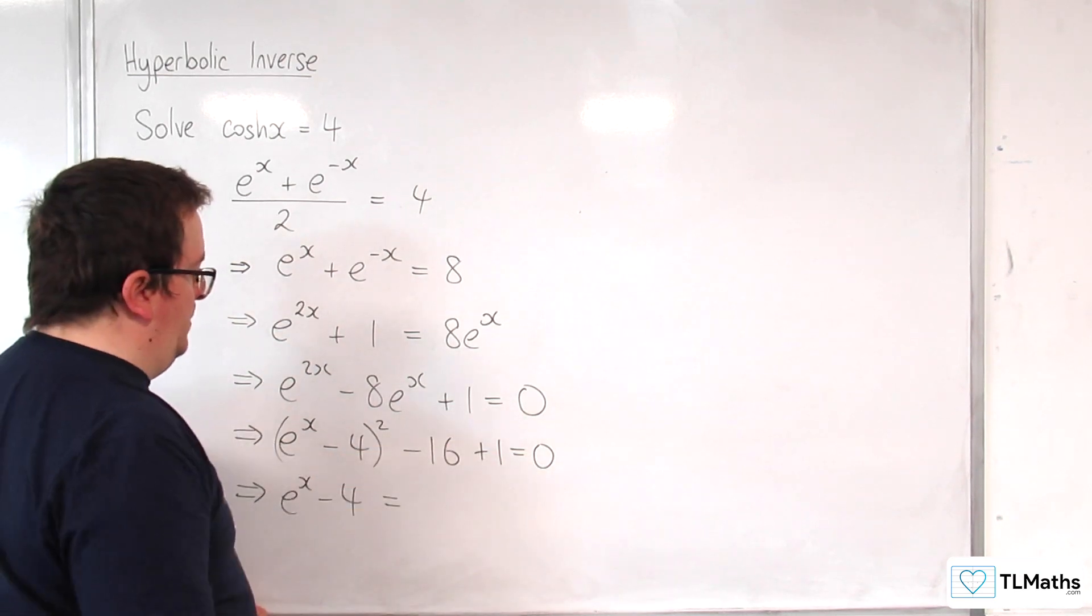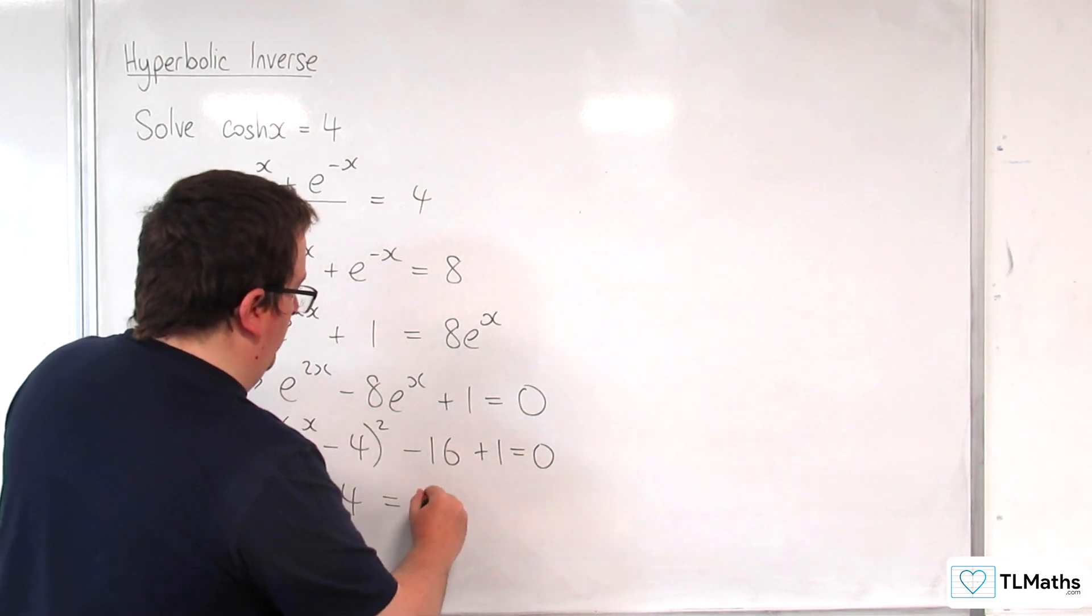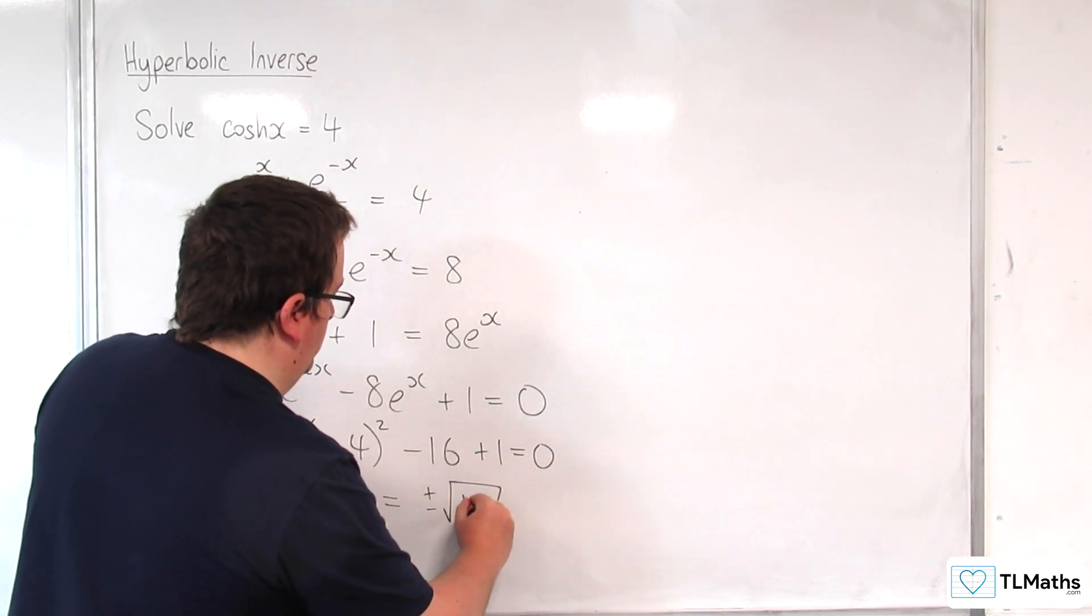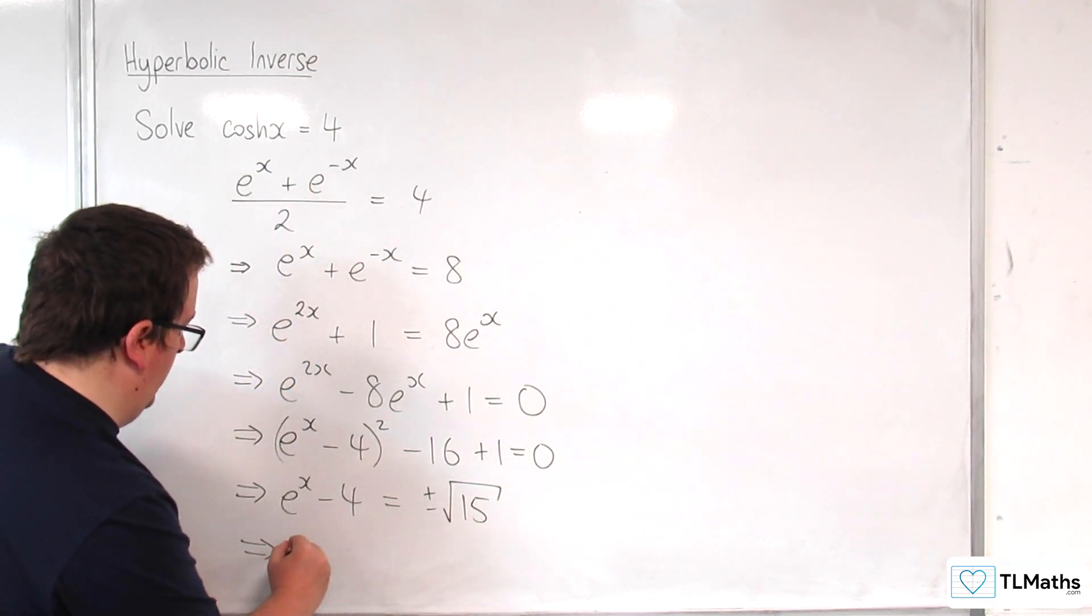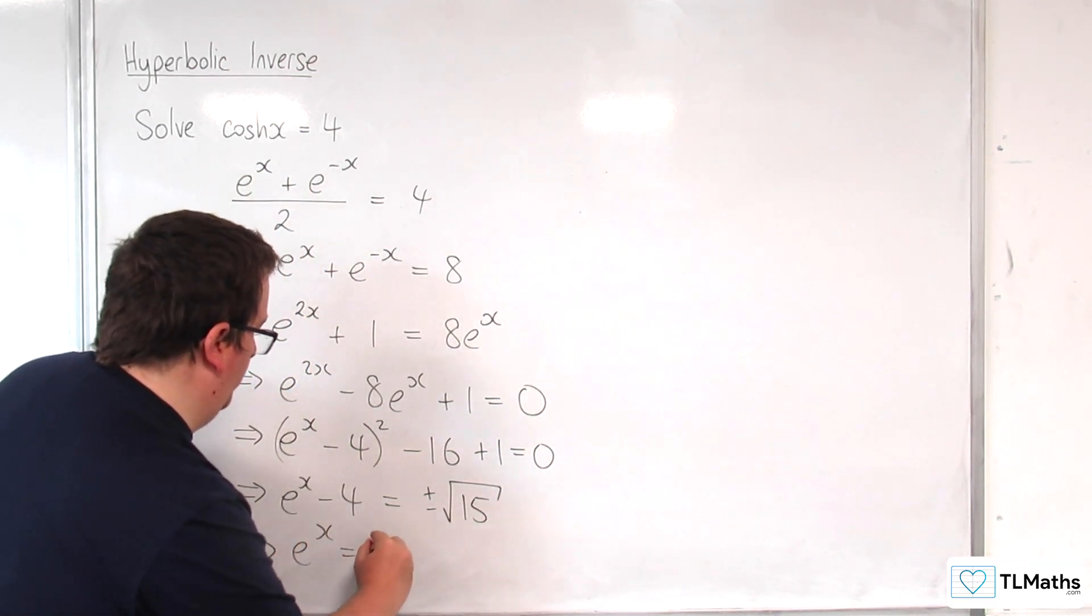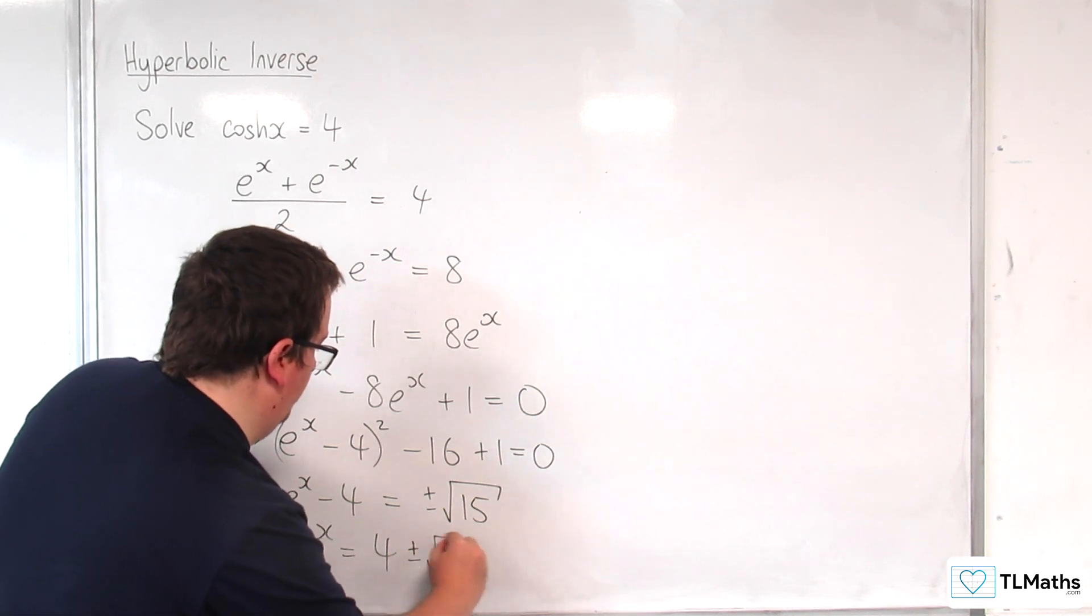Add 15 to both sides and square root both sides, we get plus or minus root 15. And so e to the x is equal to 4 plus or minus root 15.